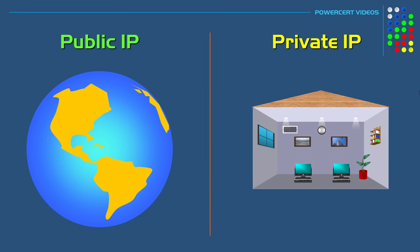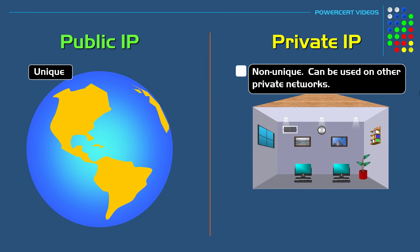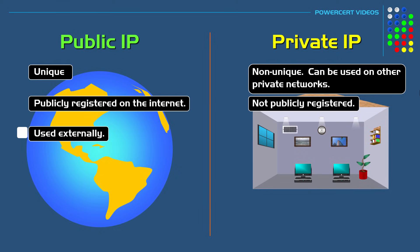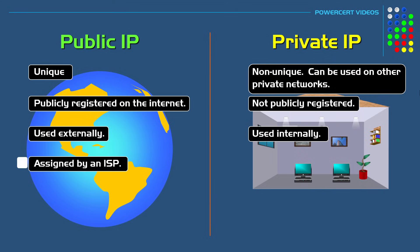To summarize: public IP addresses are unique, while private IP addresses are non-unique, because the same private IP addresses can be used in other private networks. Public IPs are publicly registered so they can access the internet, while private IPs are not publicly registered so they cannot access the internet directly. Public IPs are used externally on the internet, while private IPs are used internally on local networks. Public IPs are assigned by your ISP, while private IPs are assigned by your router.